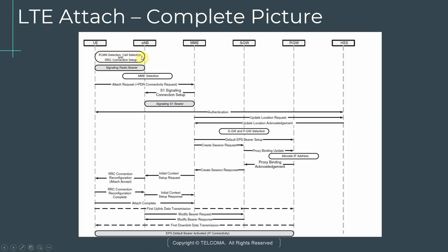The process starts with PLMN selection, cell selection, and RRC connection setup between the UE and the eNodeB. At that point, a signaling radio bearer is established between the eNodeB and the UE. Based on the PLMN, the eNodeB determines which MME the subscriber should be sent to for authentication — this is the MME selection step.